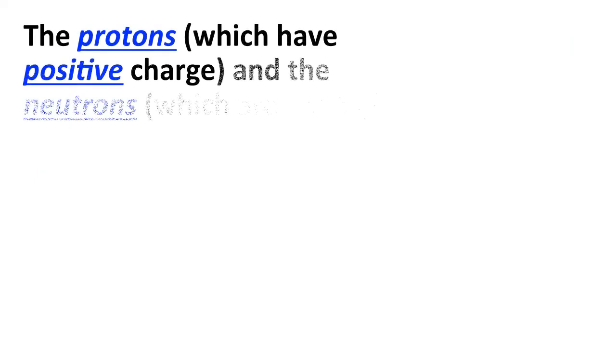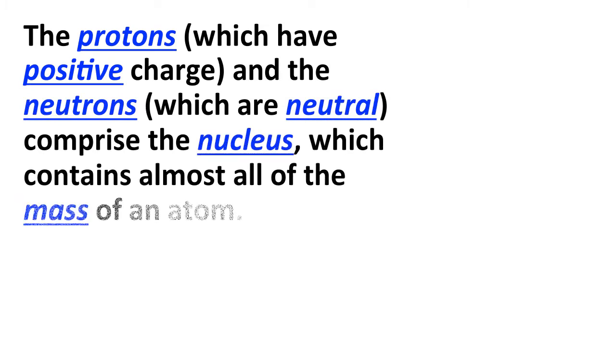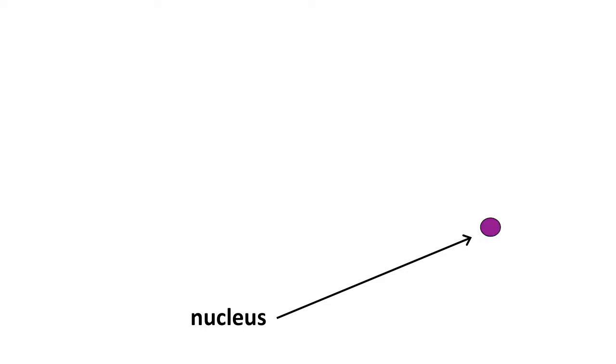Now the protons have a positive charge. The neutrons are neutral and, together, the protons and the neutrons make up the nucleus. And the nucleus contains almost all of the mass of an atom. So here is a representation of the nucleus of a particular atom. It has three protons represented by red spheres, four neutrons represented by blue spheres, and this is the nucleus of a particular type of lithium atom.